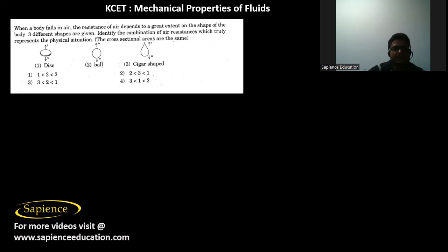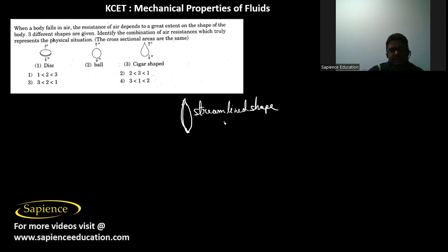The next question: when a body falls in air, the resistance of air depends to a great extent on the shape of the body. Three different shapes are given — identify the combination of air resistances which truly represents the physical situation. The cross-sectional areas are the same, but the air resistance would be least for the cigar shape, since it is almost similar to a streamline shape, which has the least air resistance or least fluid friction.